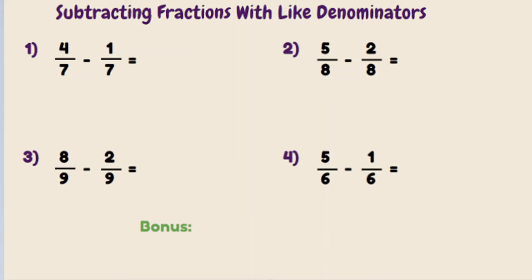Let's take a look at our first example. What is 4 sevenths minus 1 seventh? Step one is going to be subtract numerators. So 4 minus 1 is going to equal 3. And we're going to keep 7 the same. So 3 sevenths is our answer.